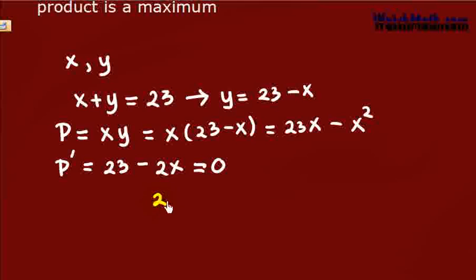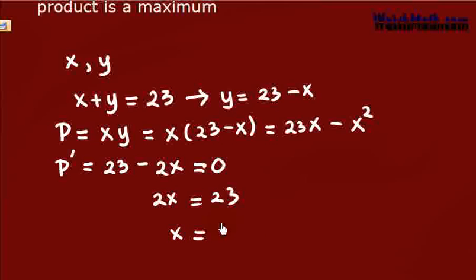We set this equal to 0 to find the critical numbers. Hence, we have 2x equals 23. Solving for x, we have x equals 23 over 2.